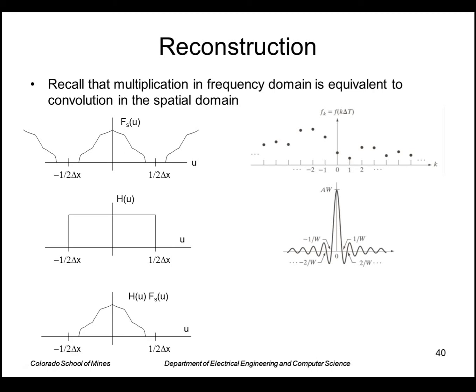So multiplying these two point by point to reconstruct the original is equivalent to convolving the sinc function with our set of samples. So if we were to do that in the spatial domain with convolution, we would get back our original image. Or we could have gone this way too. We could have just done an inverse Fourier transform on this to get our original function back.